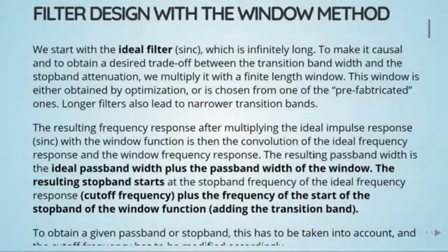We start with the ideal filter, the sinc function, which is infinitely long. To make it causal and to obtain a desired trade-off between the transition band width and the stop band attenuation, we multiply it with a finite length window. This window is either obtained by an optimization or is chosen from one of the well-known and studied windows, like we've seen in the previous tutorial.